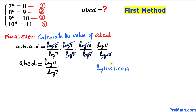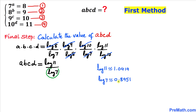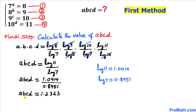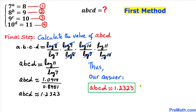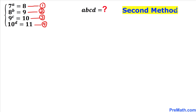Using a calculator, log of eleven is approximately 1.0414 and log of seven is approximately 0.8451. Therefore, a times b times c times d turns out to be approximately equal to 1.2323. Now let me share with you the second method.